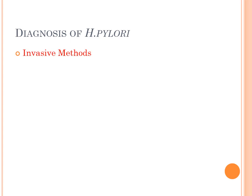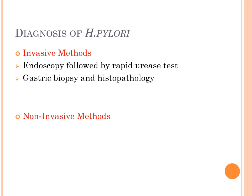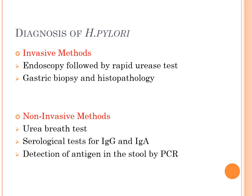For diagnosis of Helicobacter pylori, tests are divided into invasive and non-invasive methods. Invasive methods include endoscopy followed by a rapid urease test, and gastric biopsy followed by histopathology using special stains to demonstrate H. pylori. Non-invasive tests include the urea breath test, serological tests for IgG and IgA antibodies, and detection of the organism's antigen in stool by polymerase chain reaction.